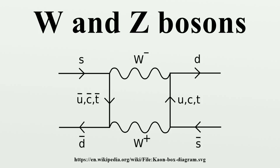The discovery of the W and Z bosons themselves had to wait for the construction of a particle accelerator powerful enough to produce them. The first such machine that became available was the Super Proton Synchrotron, where unambiguous signals of W bosons were seen in January 1983 during a series of experiments made possible by Carlo Rubbia and Simon van der Meer. The actual experiments were called UA1 and UA2. Van der Meer was the driving force on the accelerator end. UA1 and UA2 found the Z boson a few months later, in May 1983. Rubbia and van der Meer were promptly awarded the 1984 Nobel Prize in Physics. The W+, W-, and Z⁰ bosons, together with the photon, comprise the four gauge bosons of the electroweak interaction.